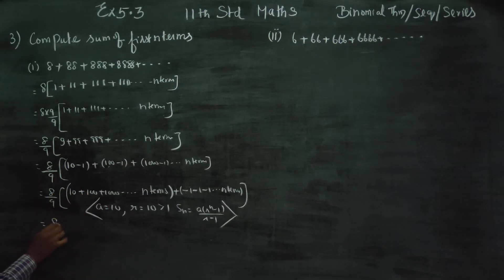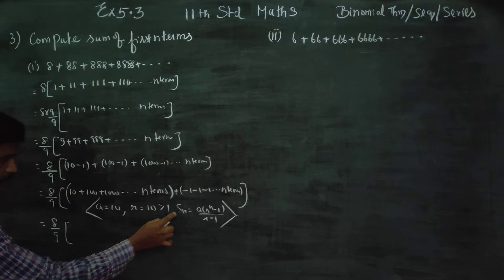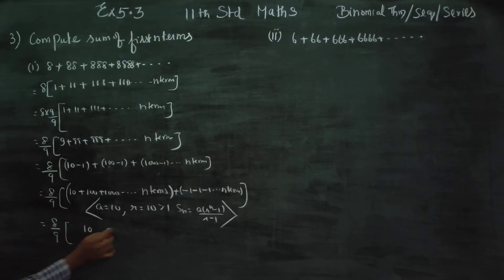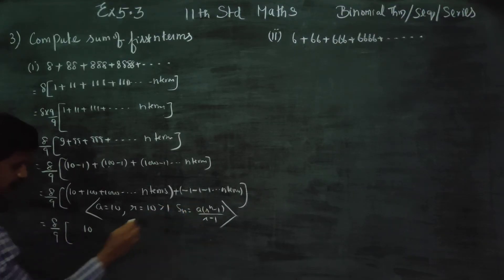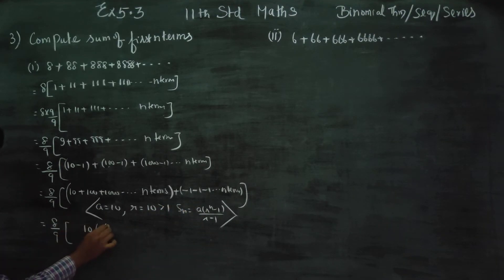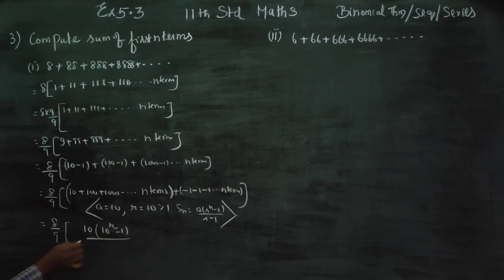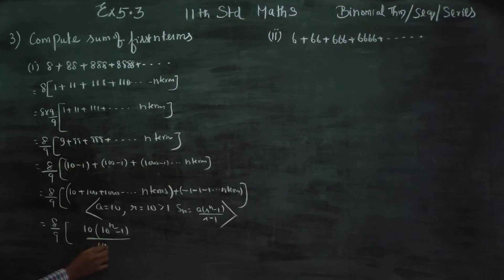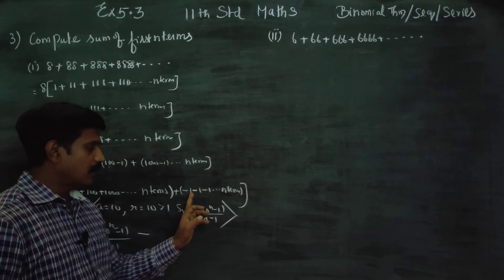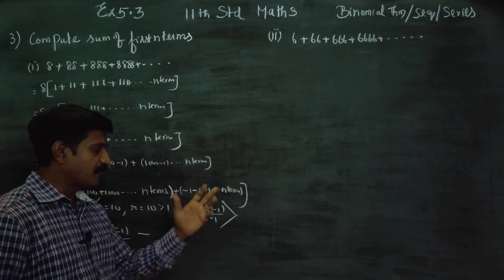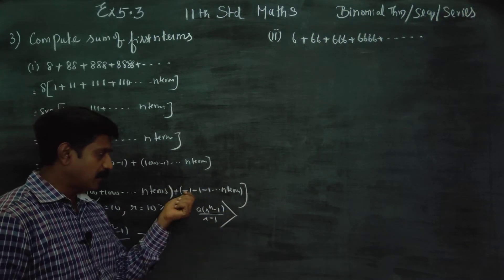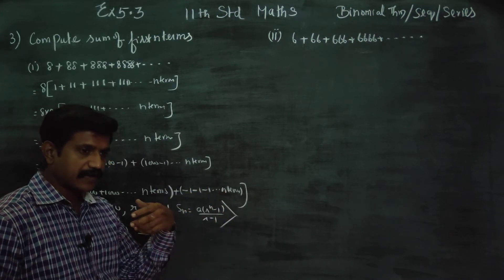Substituting the same values: A is 10, R is 10. Apply the SN formula: 8 by 9 times the sum, with A is 10, and R power N minus 1 divided by R minus 1, which is 10 power N minus 1 divided by 10 minus 1.